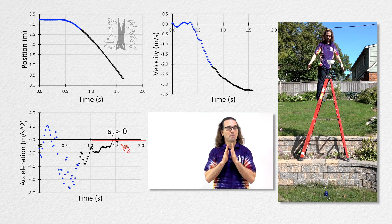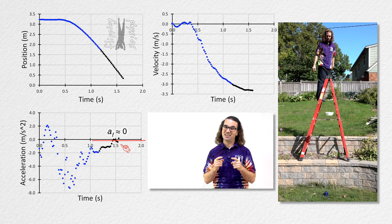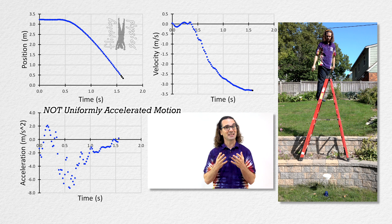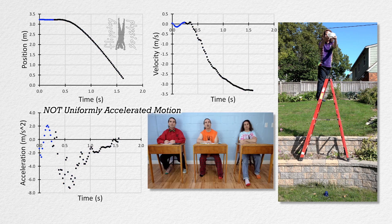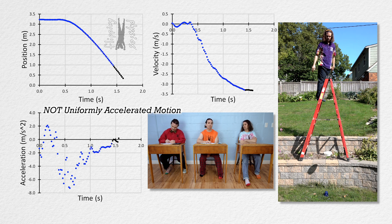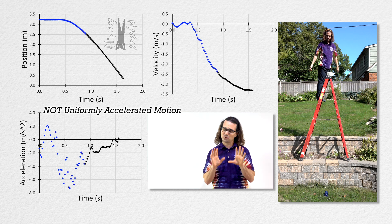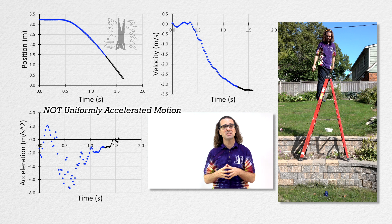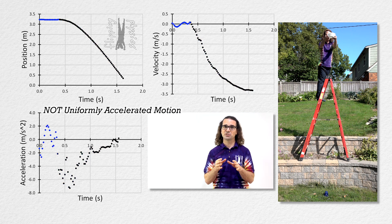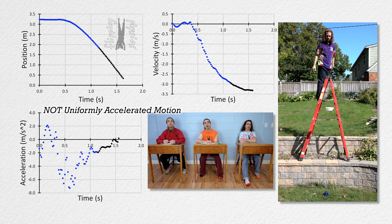It is important to make it abundantly clear that this is not uniformly accelerated motion. You can clearly see on the graph that the acceleration is not constant. The force of drag changes with velocity, causing the net force and acceleration to not be constant. Some students want to apply the uniformly accelerated motion equations to this situation — you cannot do that.